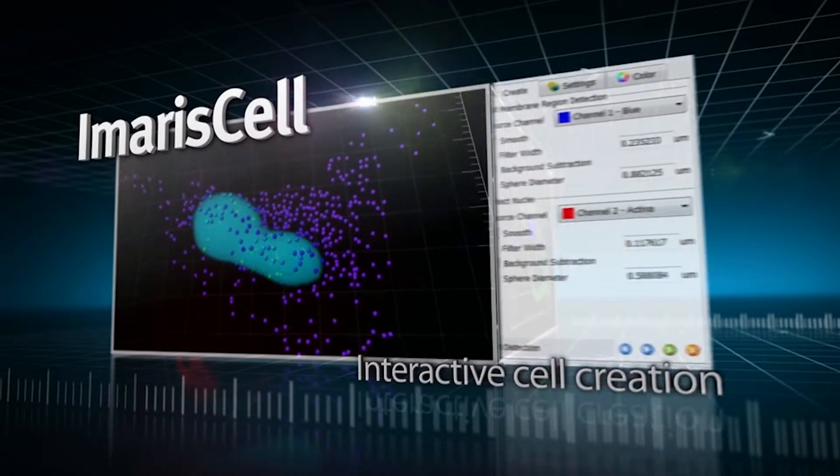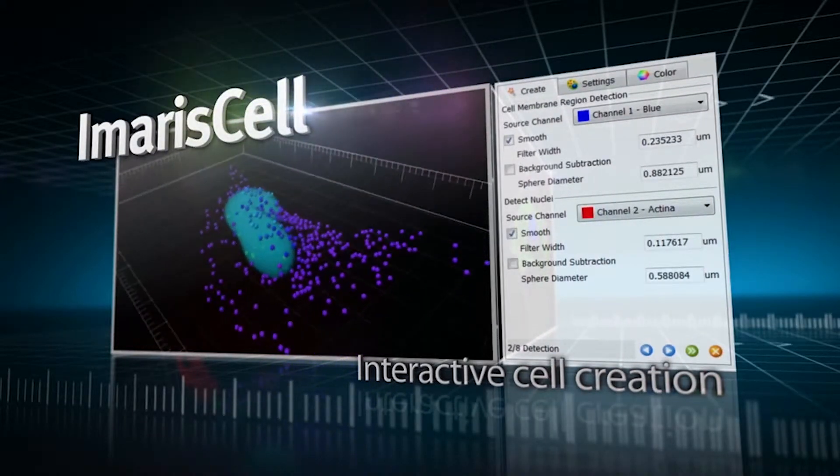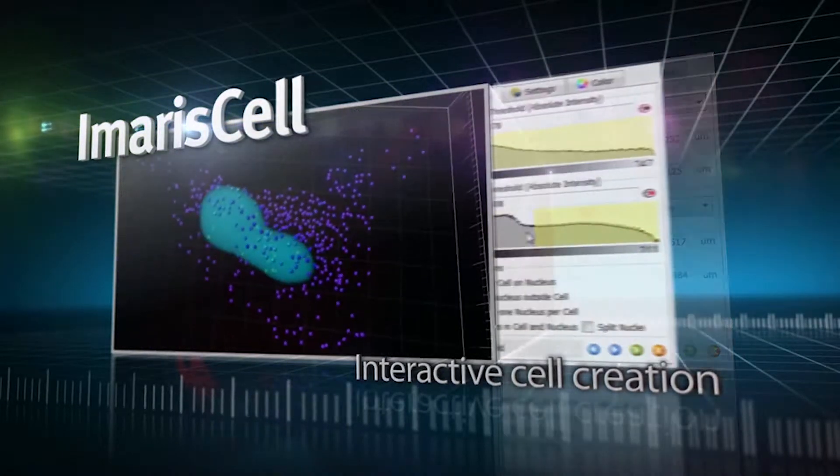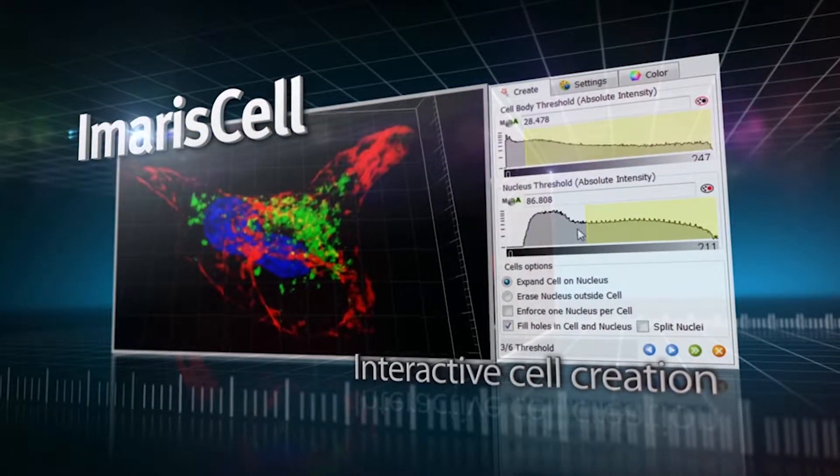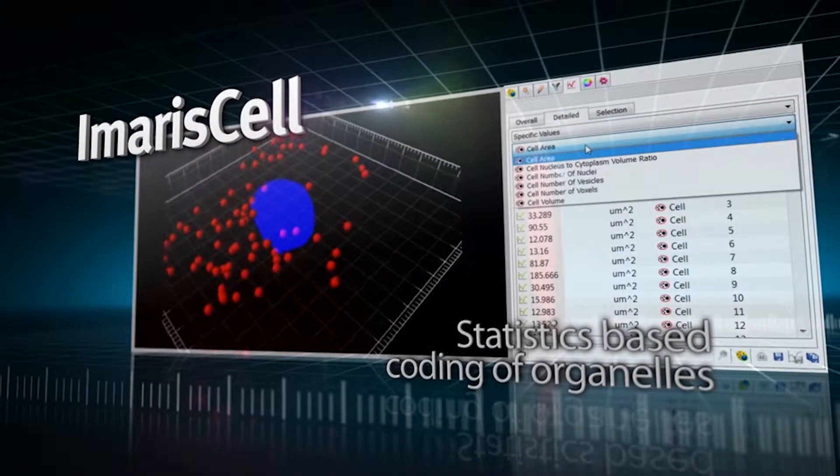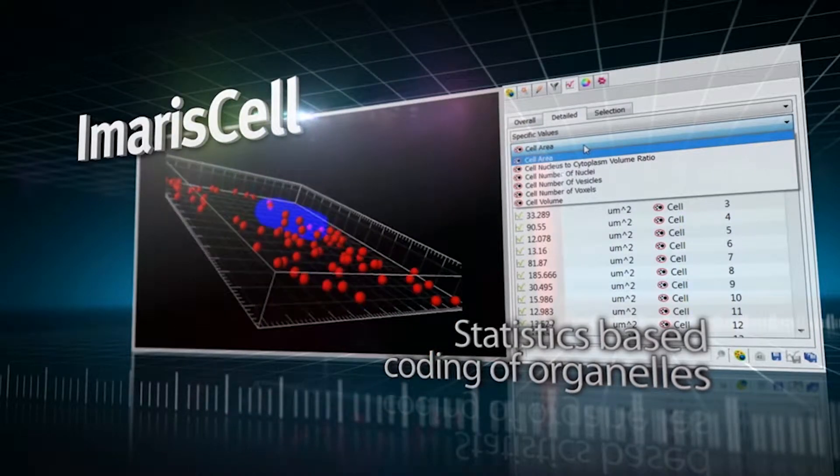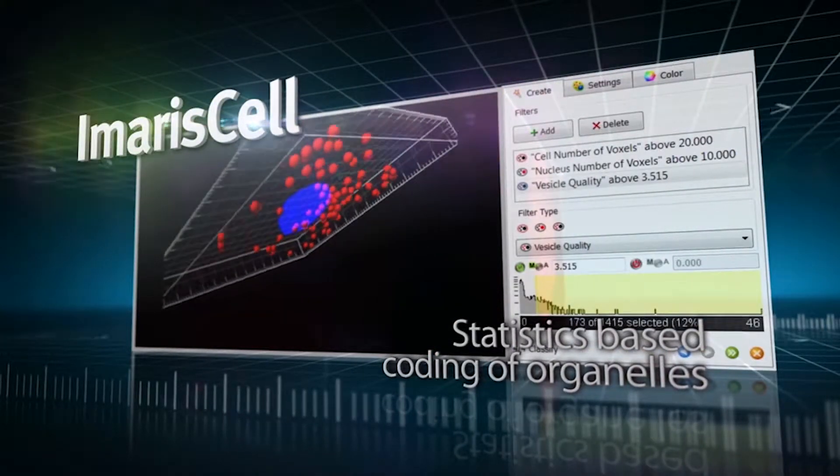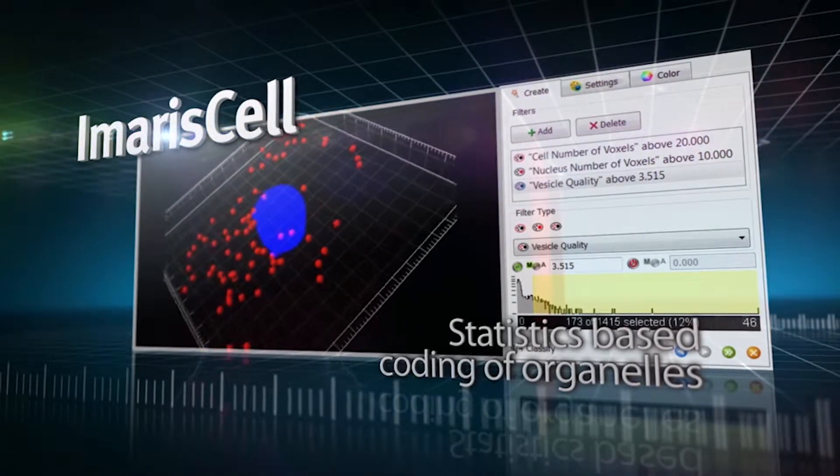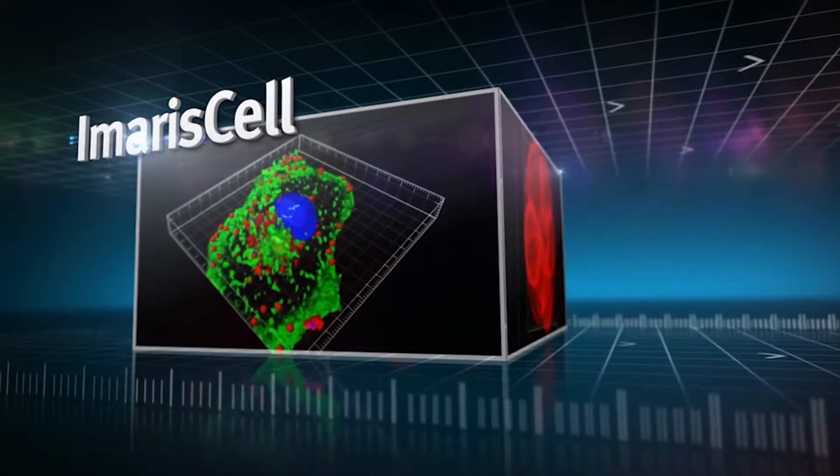Imaris Cell uses Bitplane's powerful image analysis algorithms and intuitive creation wizards to help you along the process of detection, display and editing of the cell's organelles. With Imaris Cell's advanced visualization of newly analyzed organelles, you can color code the nuclei and vesicles according to many statistical parameters, like volume, sphericity, distance from membrane and many more.